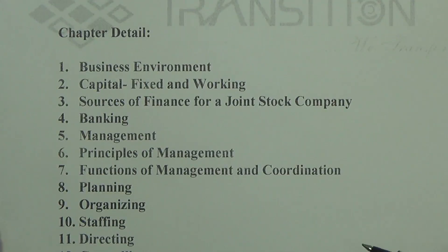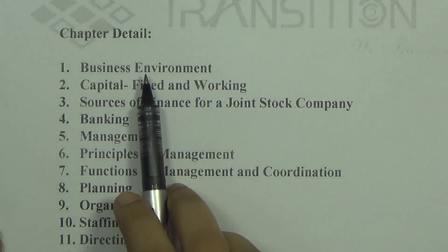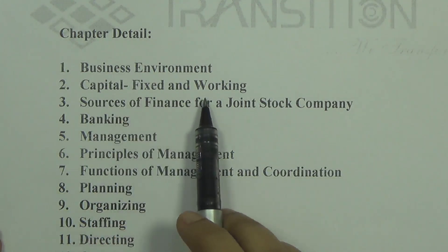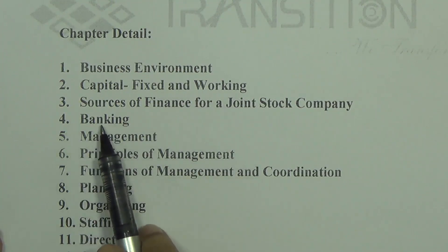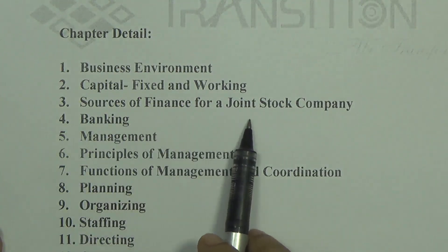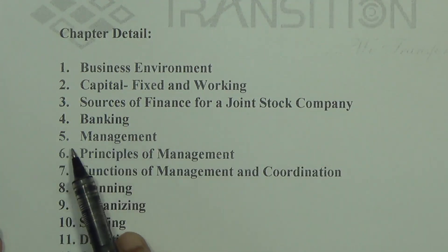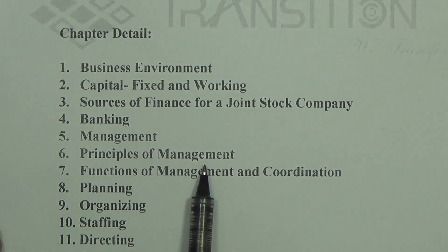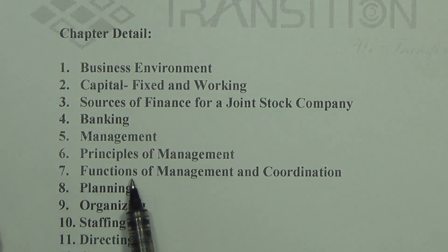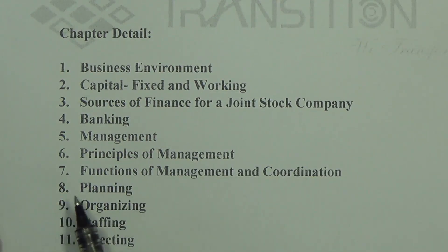Now let us see some of the chapters you have for your syllabus. First chapter is business environment. Second chapter is capital — both fixed and working. Third chapter is sources of finance for a joint stock company. Fourth chapter is banking. Fifth chapter is management. Sixth chapter is principles of management. Seventh chapter is functions of management and coordination.